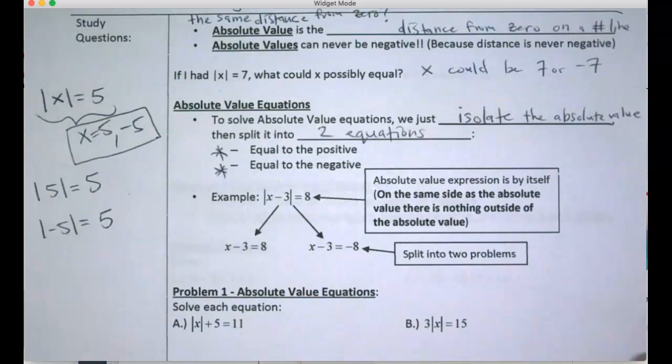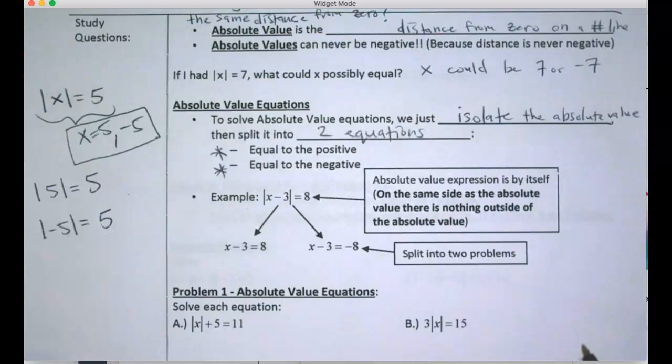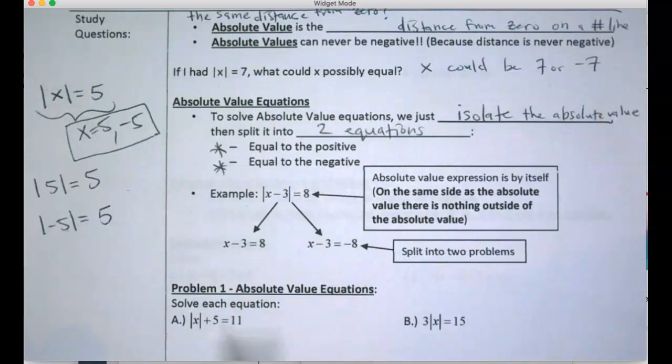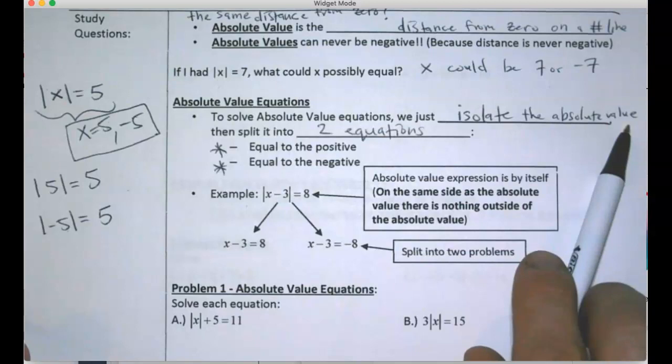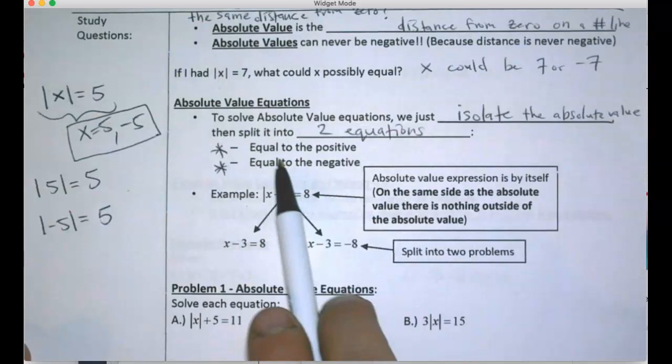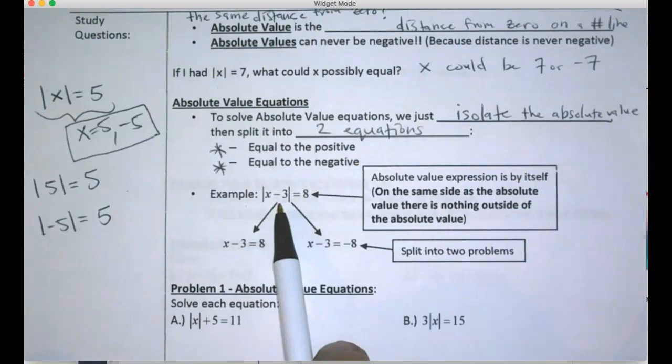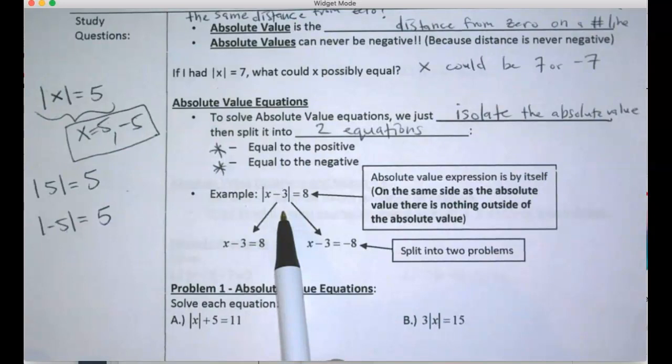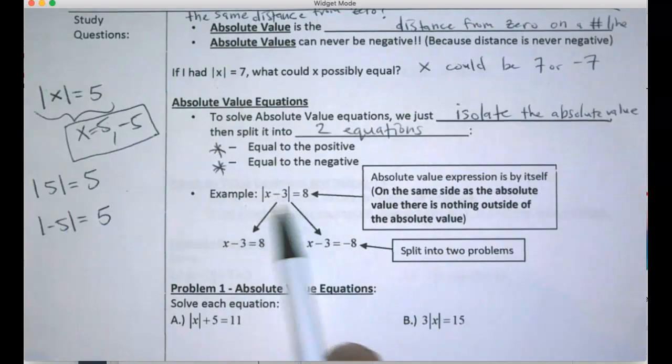Distance is like a positive value. That doesn't mean x is always going to be a positive number, but the absolute value itself has to be positive. To solve absolute value equations: isolate the absolute value, then split it into two equations — rewrite two equations, one positive and one negative. You can see in this example the absolute value is by itself. Once you have it by itself, you rewrite: one equation equals positive 8.